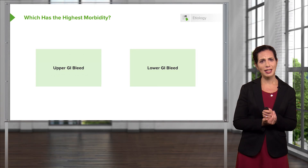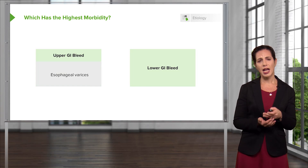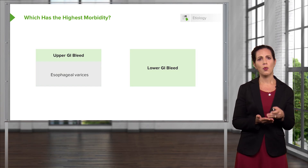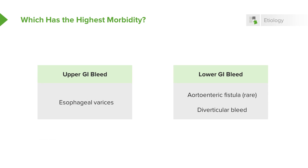The highest morbidity for upper GI bleed comes from esophageal varices, which can bleed quite significantly. For lower GI bleed, the most serious is the aortoenteric fistula, though rare, followed by diverticular bleeds. Patients who have diverticulosis can have a lot of bleeding from their GI tract.